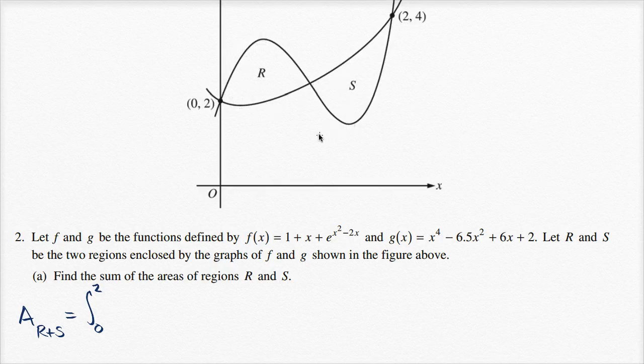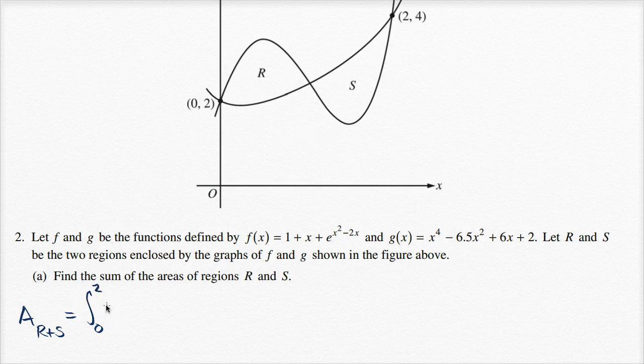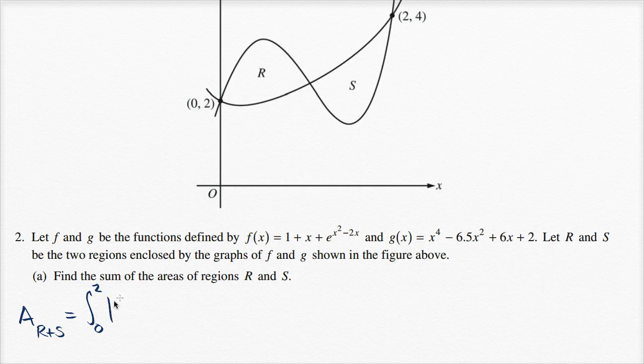But if we take the absolute value, it doesn't matter which one we're subtracting from the other—we're just getting the absolute value of the difference. So let's take the absolute value of f(x) - g(x) dx. So that's going to be the sum of the areas,